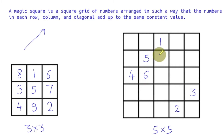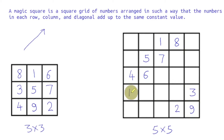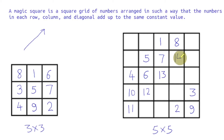Up and right: 7. Up and right: 8. Up and right — we're out, so we go down: 9. Up and right — out of the square, wrap to the other side: 10. Up and right — cell is filled, go one cell down: 11. Up and right: 12. Up and right: 13. Up and right: 14. Up and right: 15. We're moving out and the wrapped cell is not empty, so we go down: 16.